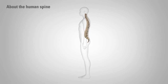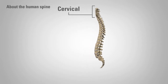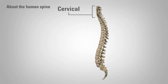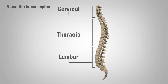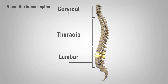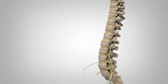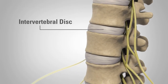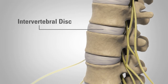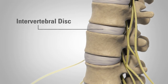The human spine is comprised of the cervical spine, or neck, the thoracic spine, or chest, and the lumbar spine, or lower back. There are 24 vertebrae in the spine. Vertebrae are connected by several joints. The main joint is a flexible cushion between two vertebrae, called an intervertebral disc.